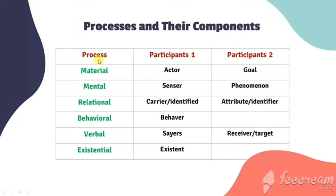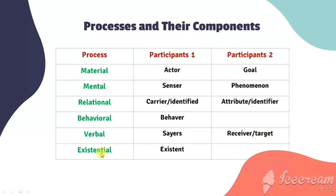In material process, participant 1 is called actor while participant 2 is called goal. In mental process, participant 1 is called sensor while participant 2 is called phenomenon. In relational process, participant 1 is called carrier or identified while participant 2 is called attribute or identifier. In behavioral process, only one participant is required, called behavior. In verbal process, participant 1 is called sayer and participant 2 is called receiver or target.